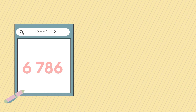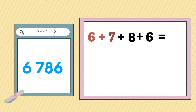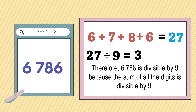Another example: is 6,786 divisible by 9? Let's check. We're going to add all the digits: 6 plus 7 plus 8 plus 6. 6 plus 7 is equal to 13, plus 8 is equal to 21, plus 6 is equal to 27. Is 27 divisible by 9? 27 divided by 9 is equal to 3 and there is no remainder. Therefore, 6,786 is divisible by 9 because the sum of all the digits is divisible by 9.